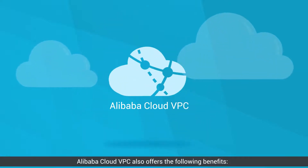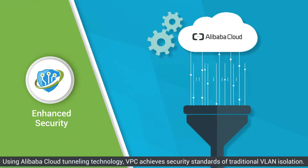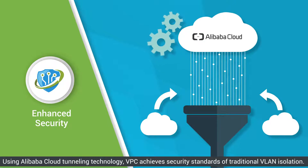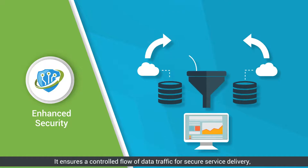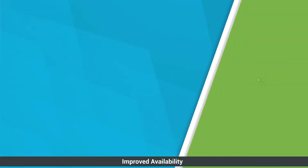You can configure route tables and network gateways. Alibaba Cloud VPC also offers the following benefits. Enhanced security: using Alibaba Cloud tunneling technology, VPC achieves security standards of traditional VLAN isolation. It ensures a controlled flow of data traffic for secure service delivery.